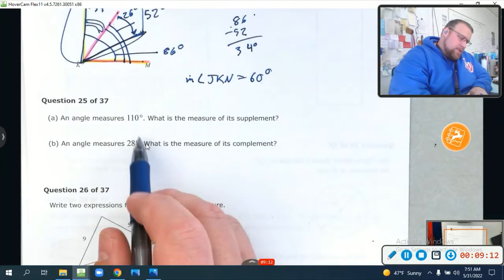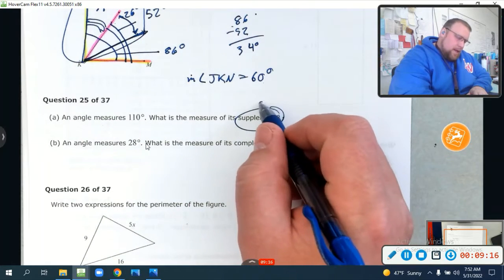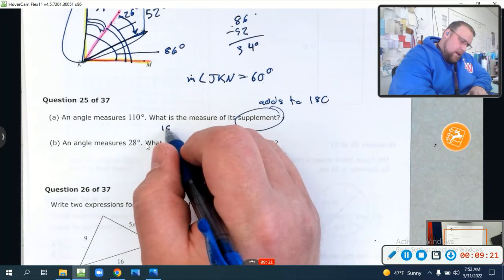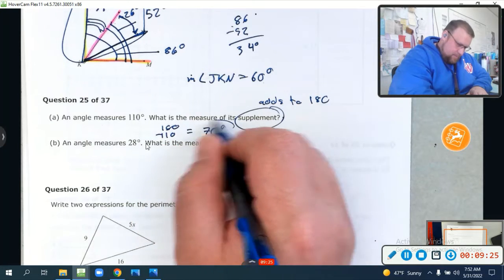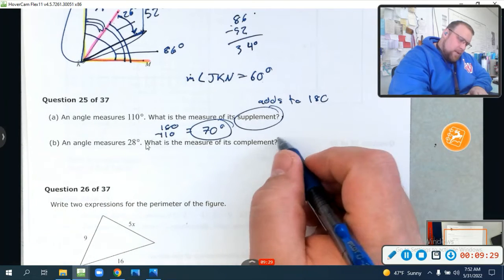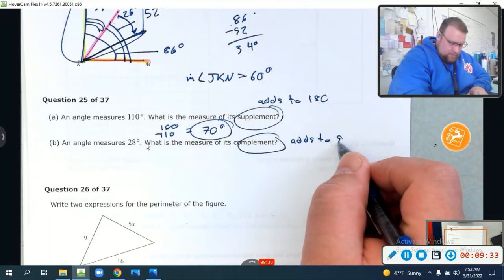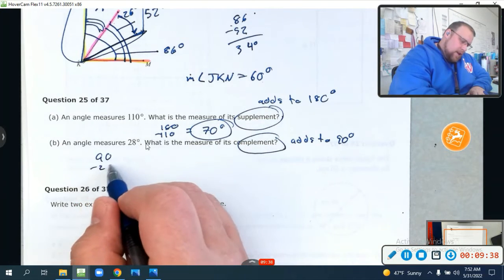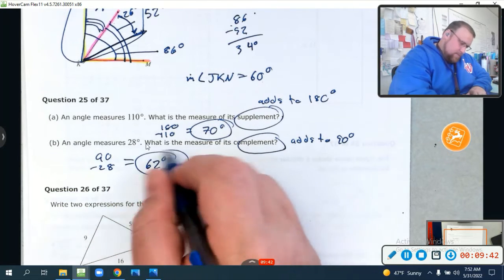An angle measures 110 degrees. What is the measure of its supplement? The supplement adds to 180. So, that would be 180 minus 110, which equals 70 degrees. An angle measures 28 degrees. What is the measure of its complement? A complement adds to 90. So, 90 minus 28 equals 62 degrees.